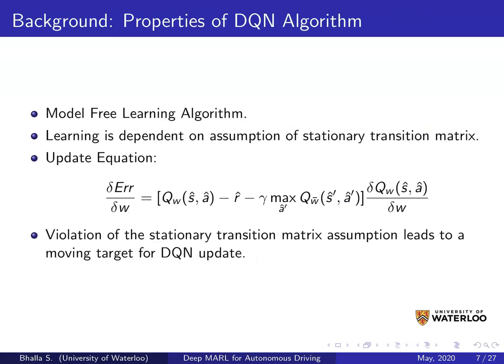Some properties of the DQN algorithm: it is a model-free algorithm, and the learning is highly dependent on the assumption that the transition matrix is stationary — meaning the probability of transition over time stays constant, even though it can be a stochastic transition matrix. This assumption is lifted in multi-agent reinforcement learning algorithms, which is why we need a separate suite of algorithms to deal with multi-agent environments.